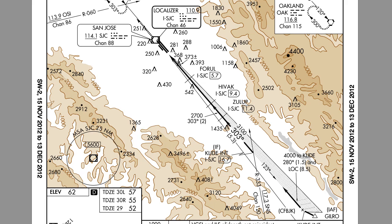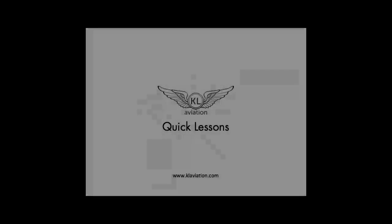DME is depicted through the use of an open D symbol with a number inside. In this case, Clyde intersection is 16.7 miles from the San Jose localizer. That's all for the major points of the plan view of an instrument approach procedure. I hope you learned something, and I look forward to seeing you in the next lesson. Thank you.